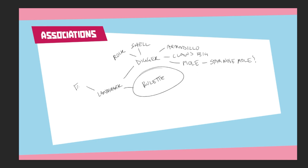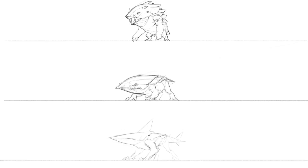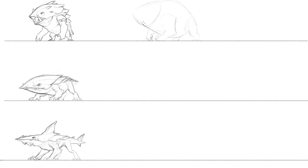One great technique I learned while studying design was building out a word association list before starting my thumbnail drawings. This helps me organize my thoughts and find visual hooks that I feel are interesting but are easily understandable for the viewer. Even right now I'm finding little hints of what are to come, like the claws being big, the star-nosed mole — a lot of these things will influence my design going forward. I actually thought this third thumbnail was a really cool idea. Having the land shark theming come out with a much more obvious shark anatomy felt really original for this creature design, and I almost picked this one to take to finish.